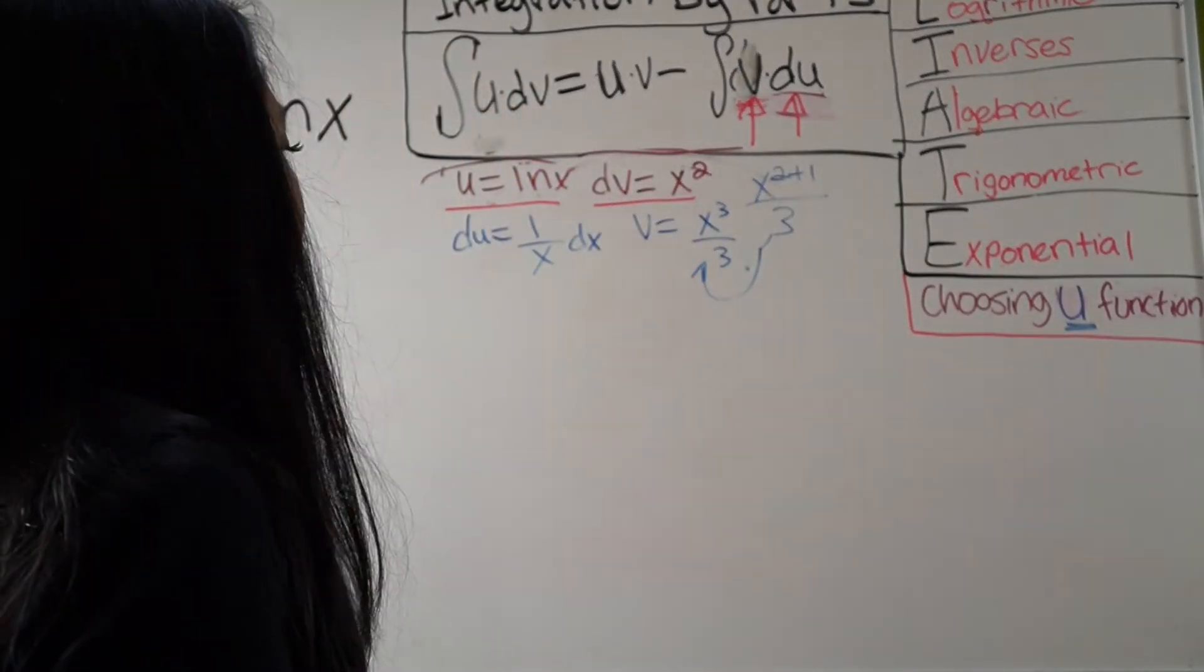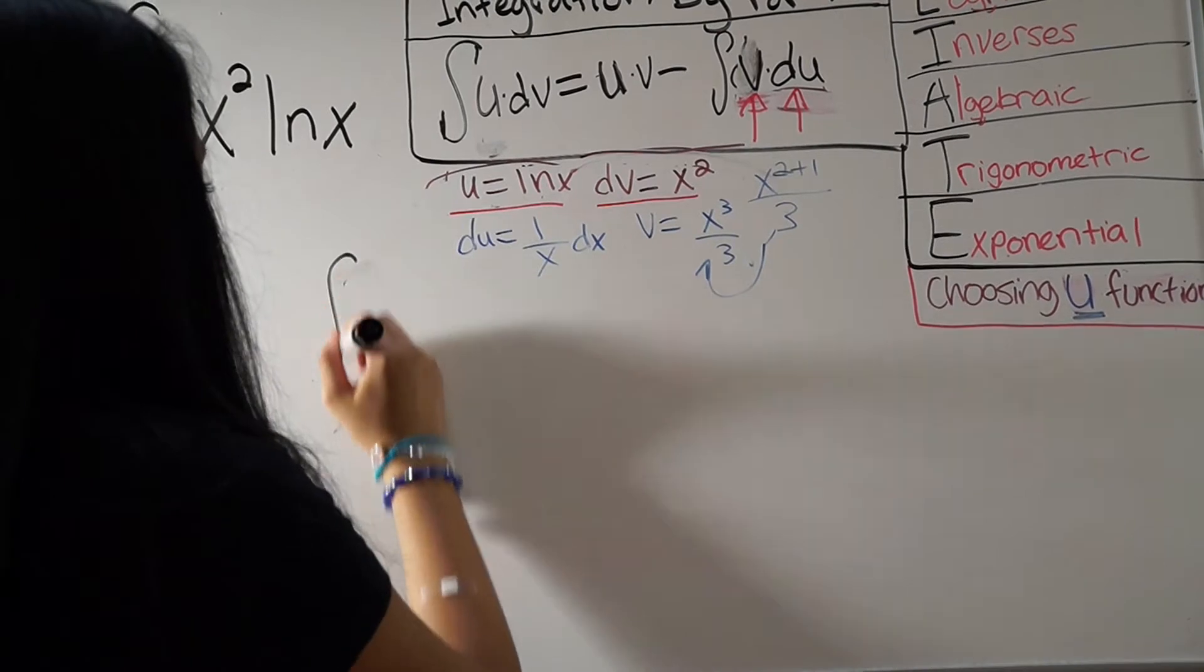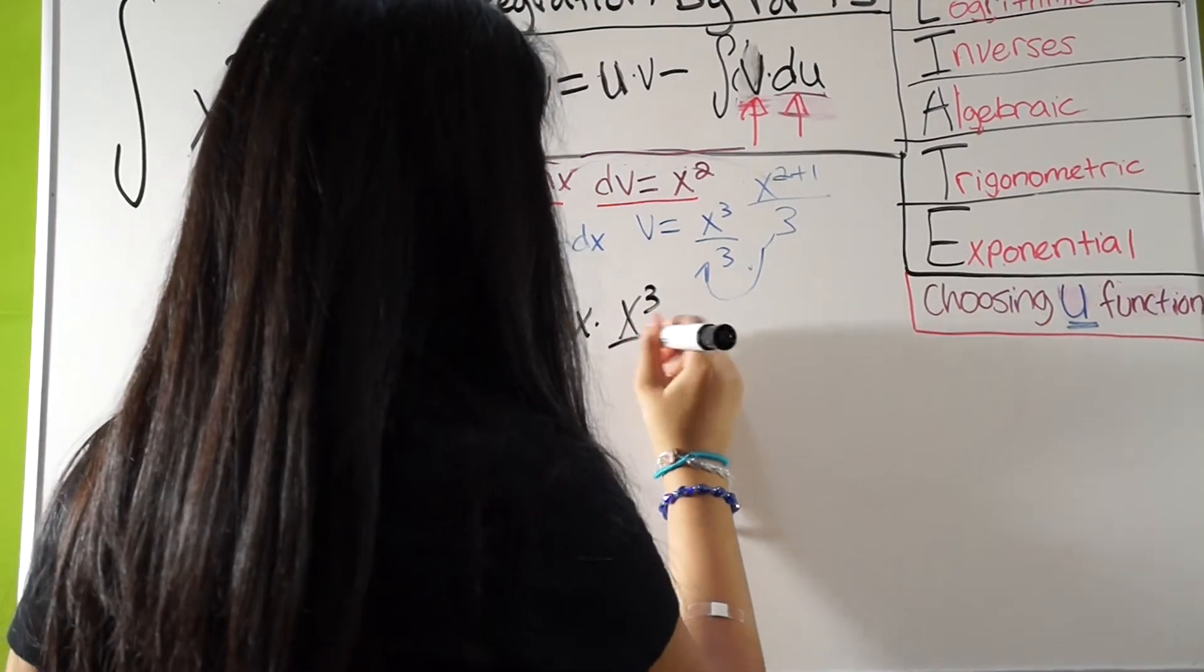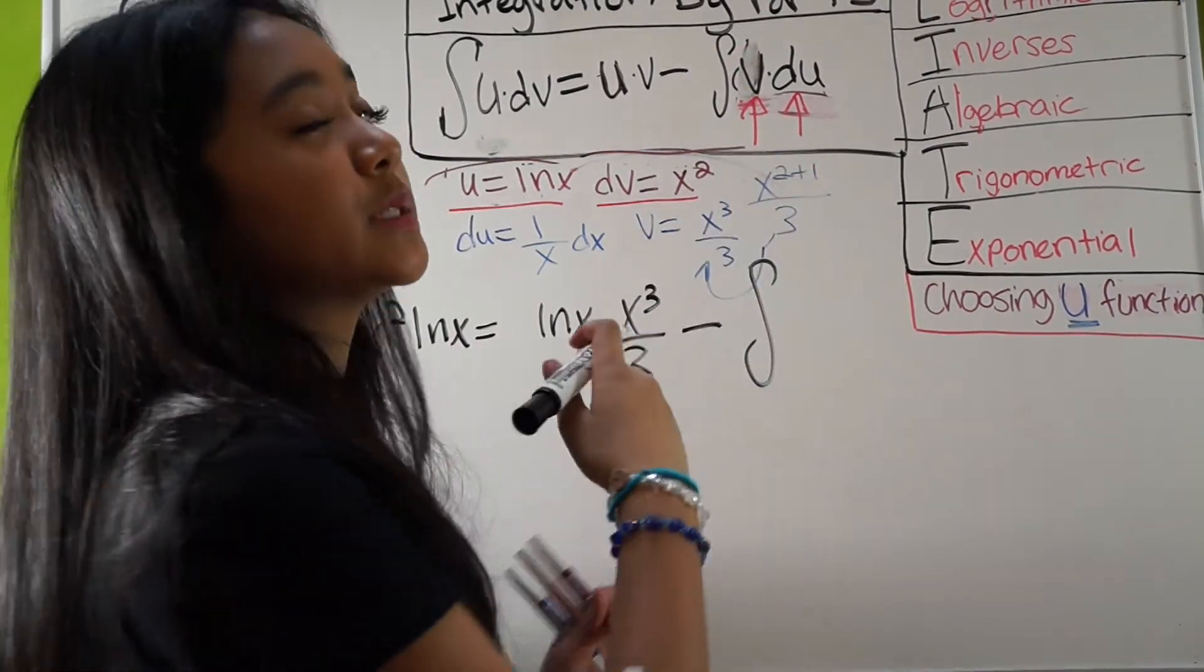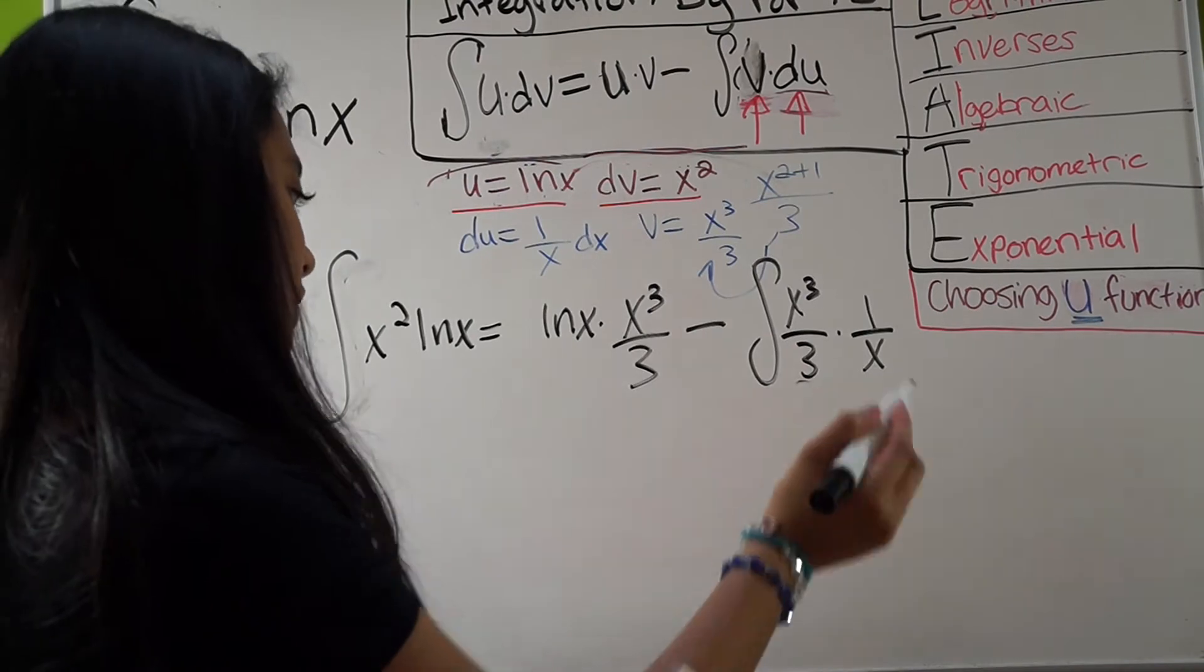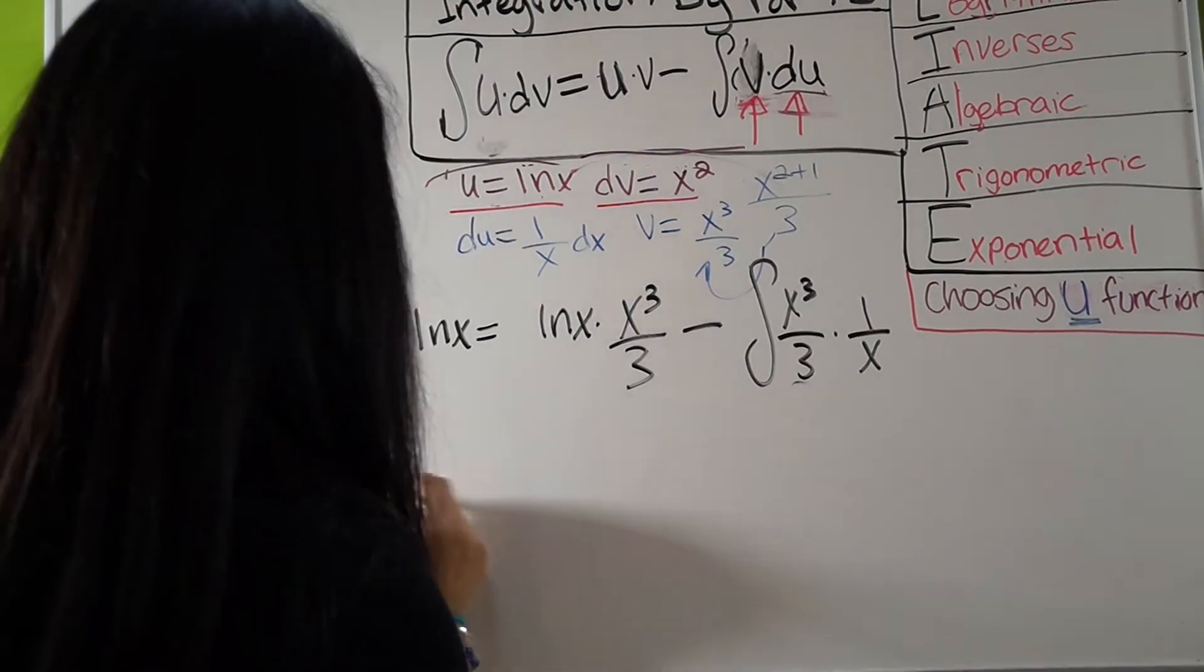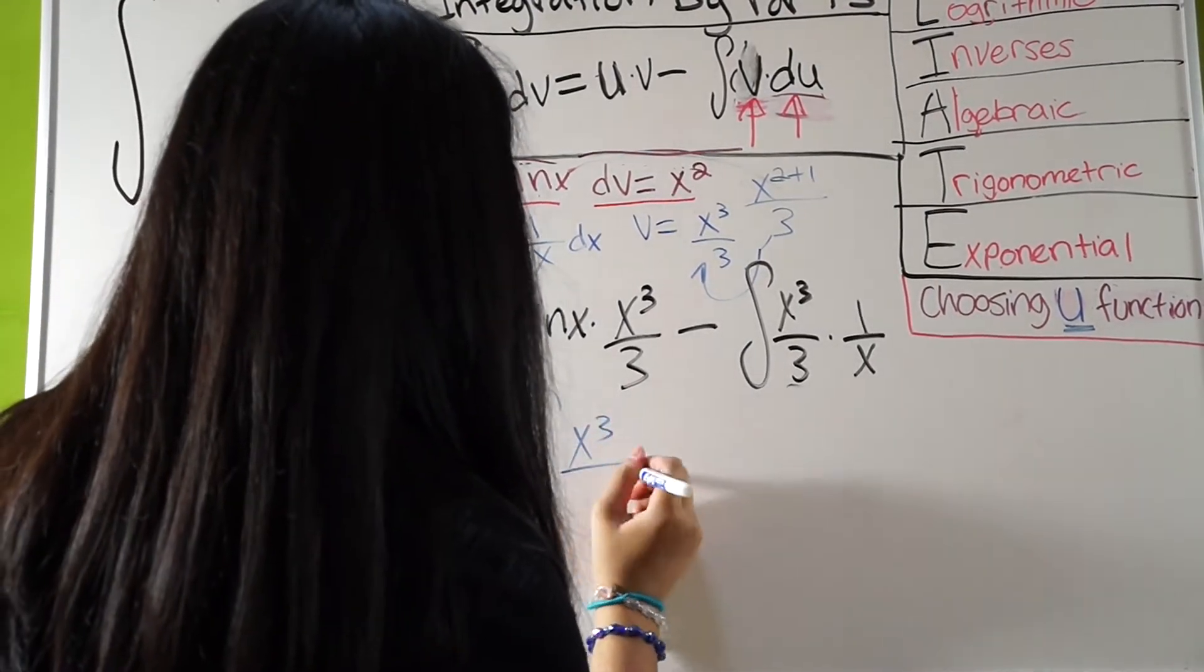Okay, so, we have now, the integral of x squared ln x equals U dot V. So, my U is ln x, and my V is x cubed over 3, minus the integral of V dot DU, I mean, my V dot DU. I always get them mixed up, sorry. So, my V is x cubed all over 3, times 1 over x. So, just to let you know, you can factor this out. So, this will be ln x, x cubed all over 3, I'm just rewriting it. So, factor 1 third out, so you have minus 1 third all over the integral of x cubed all over x.